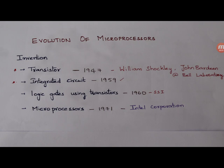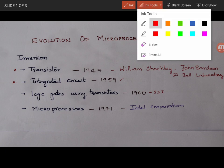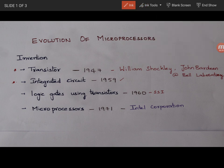Hello everyone. So today's class will discuss about the evolution of microprocessors. The beginning of microprocessor era started with the invention of transistor. The transistor is a three terminal device and it was invented in the year 1947 by William Shockley, Jan Bardin at Bell Laboratories.